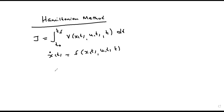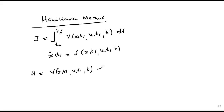To formulate the optimization problem, we form the Hamiltonian function H — also called the Pontryagin H function — defined by H as a function of V of x(t), u(t), and t, plus lambda-transpose(t) multiplied by f of x(t), u(t), and t.